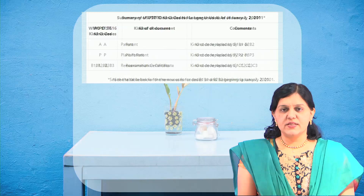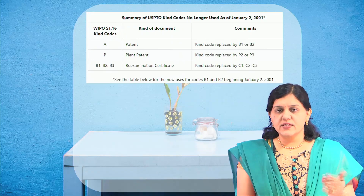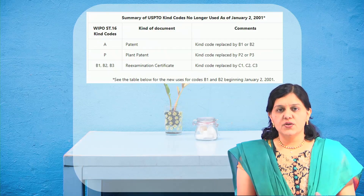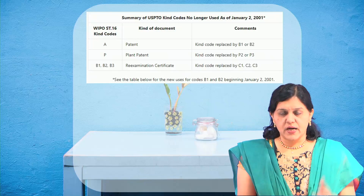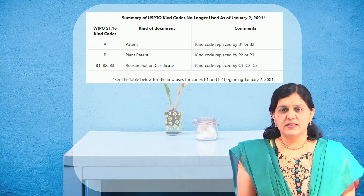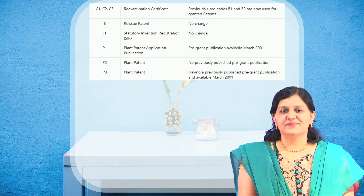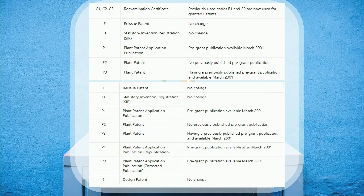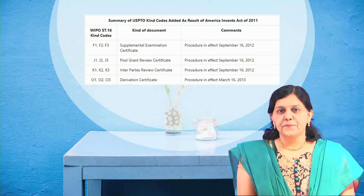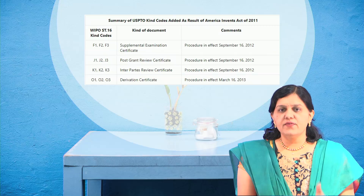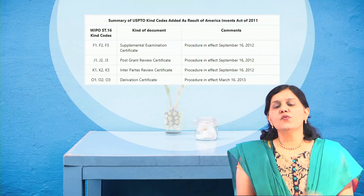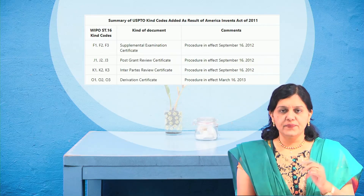Now we will check the USPTO kind code system. We have seen the WIPO system and the European system; now let's check how the USPTO works. These slides give you an overview of the kind codes used by the major patent offices — WIPO, the European patent system, and the USPTO system. Please go through the details carefully.